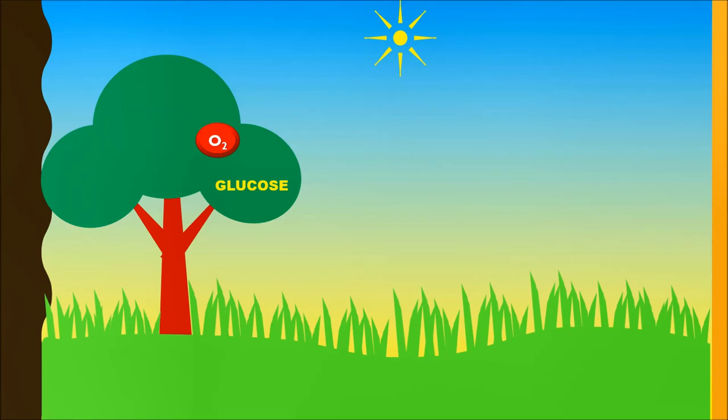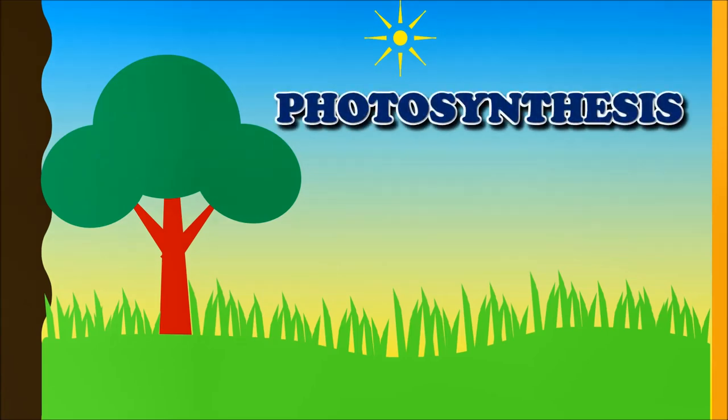Glucose is utilized for growth and other life processes. Excess of glucose is preserved in the form of starch. Oxygen gas is released out of the plant into the atmosphere. This process is known as photosynthesis.